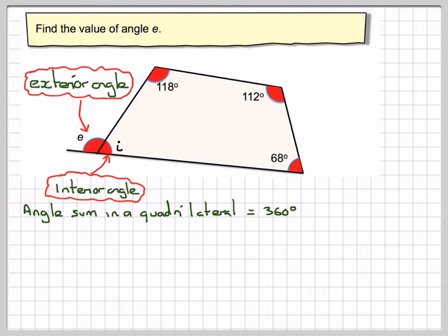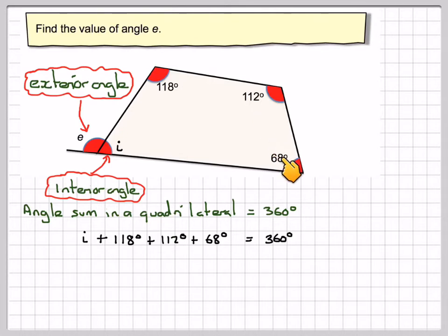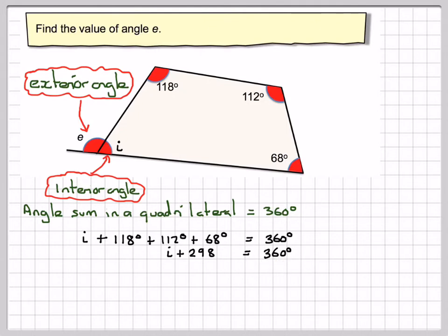Forming an equation, I'm going to have I plus 118 plus 112 plus 68 is going to be equal to 360 degrees. Adding these three together, I'm going to get I plus 298 is equal to 360. To take this to the other side, we need to subtract 298. So, I is equal to 62.